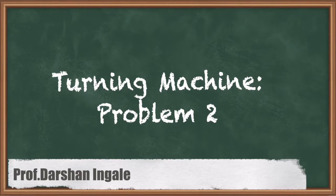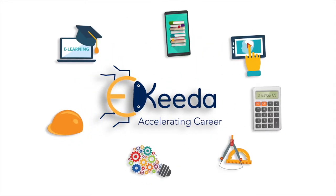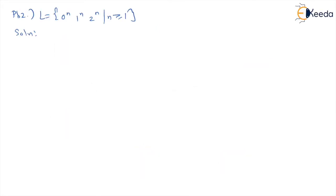Welcome back friends. I will start with the problem now and see whether I am able to do it with the help of a PDA. To solve this problem with the help of a pushdown automata, for a language like 0^n, 1^n, and 2^n,